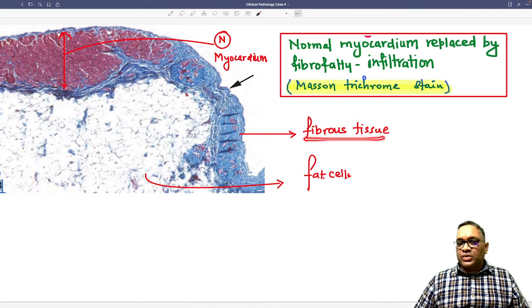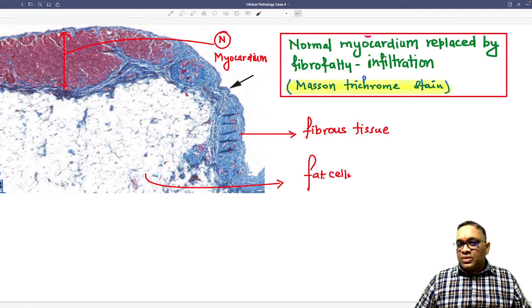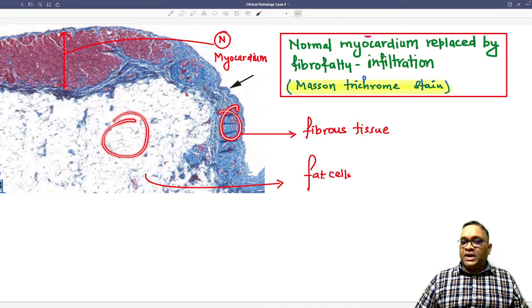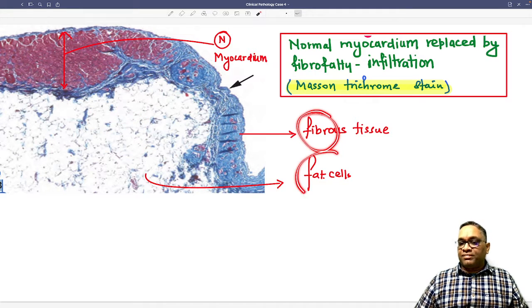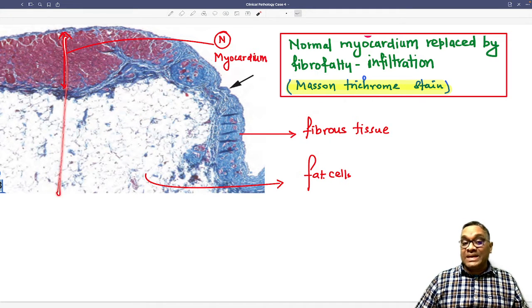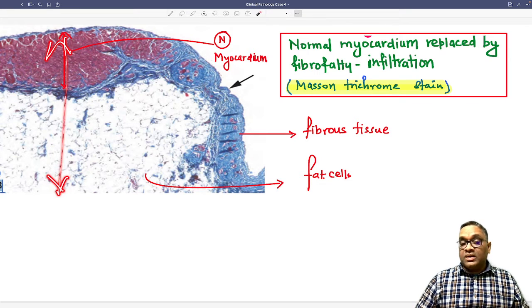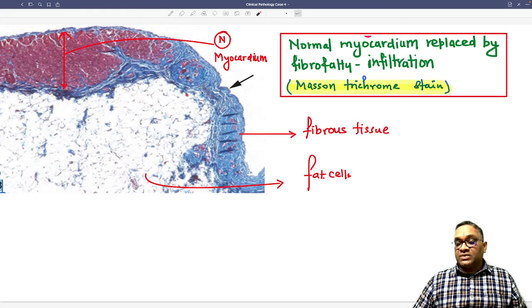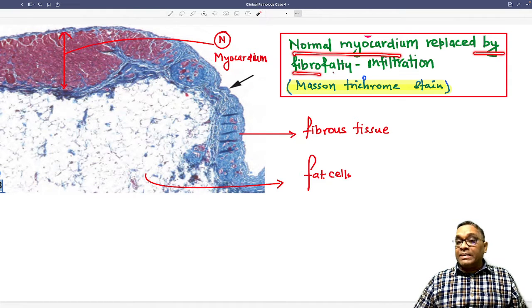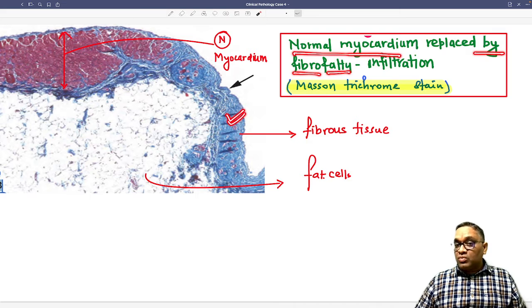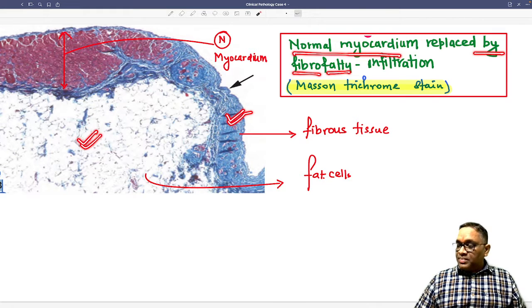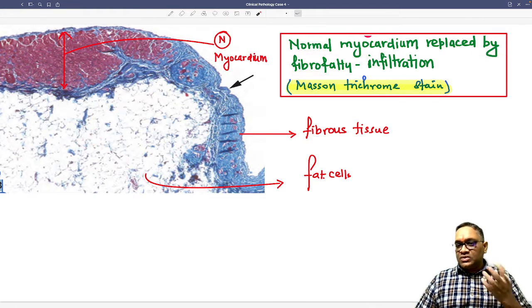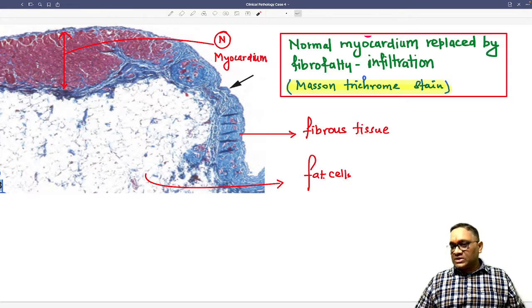Now you can see that this is the normal myocardium and this area which is looking clear, these are all fat cells. On Mason trichrome stain, the blue color cells are the connective tissue or collagen, forming the fibrous tissue. So fibrous fatty tissue has replaced the entire myocardium. Now you can see only the remnant of myocardium is visible here. Normal myocardium is replaced by fibro-fatty tissue—fibro blue color, fatty empty color. These are fat cells.